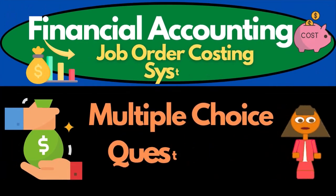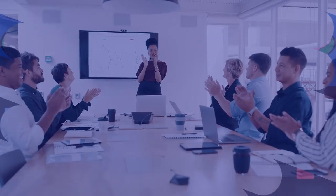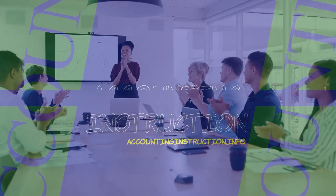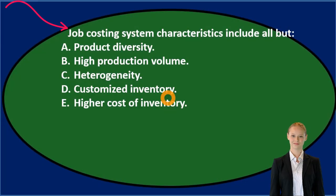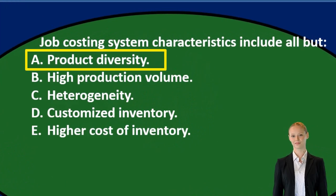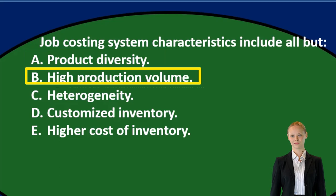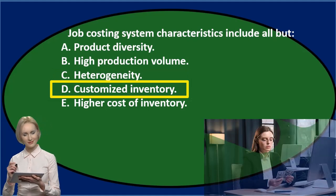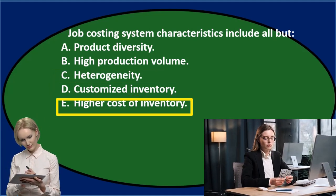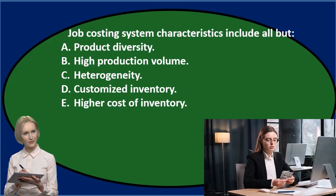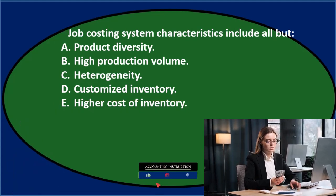In this presentation we will take a look at multiple choice questions related to a job cost system. First question: job costing system characteristics include all but — A) product diversity, B) high production volume, C) heterogeneity, D) customized inventory, and E) higher cost of inventory. We'll go through this and use the process of elimination.